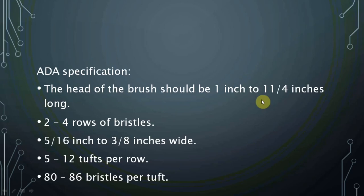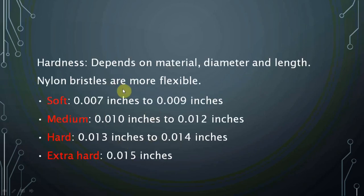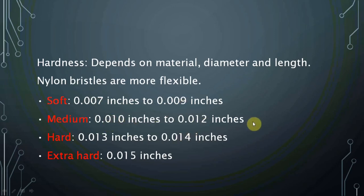According to ADA specifications, the toothbrush head should be 1 to 1.25 inches long and 0.5 by 0.375 inches wide, with 2 to 4 rows of bristles, 5 to 12 tufts per row, and 80 to 86 bristles per tuft. Depending on hardness, toothbrushes are classified as soft, medium, hard, and extra hard: soft is 0.007 to 0.009 inches, medium is 0.010 to 0.012 inches, hard is 0.013 to 0.014 inches, and extra hard is 0.015 inches.